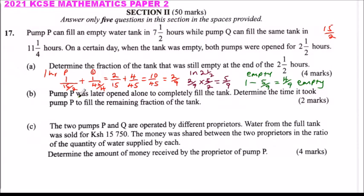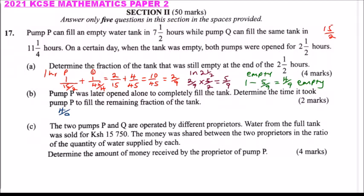In Part B, Pump P was later opened alone to completely fill the tank. Determine the time it took Pump P to fill the remaining fraction. The part remaining to be filled is 4 over 9. So you divide 4 over 9 by P's rate, which is 1 divided by 15 over 2, that is 2 over 15. Writing the inverse gives 4 over 9 multiplied by 15 over 2.